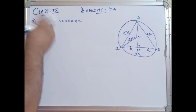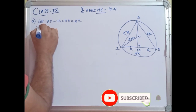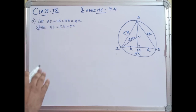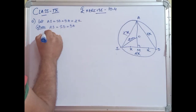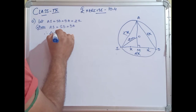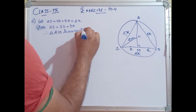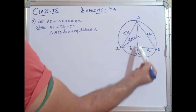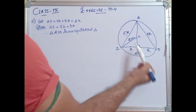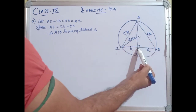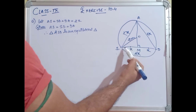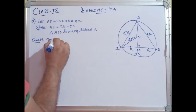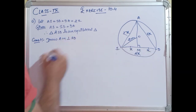Isko value humne 2x assume kar liya. Achha, question mein aapko given hai ki yeh teenon aapas mein equal hain. Yeh bhi aapne likh lete hain — Given: AS = SD = DA. Ab yeh teenon agar equal hain toh isse yeh conclusion nikalta hai ki triangle ASD ek equilateral triangle form kar raha hai. Therefore, triangle ASD is an equilateral triangle. Construction: draw AM perpendicular to SD.